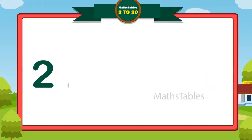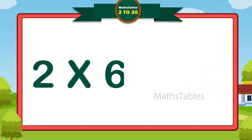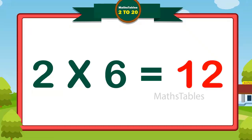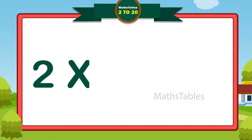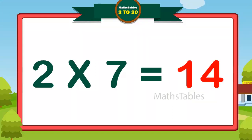Two sixes are twelve. Two sevens are fourteen. Two sevens are fourteen.